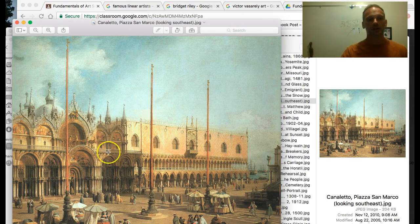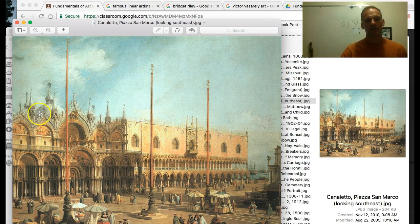This is by Canaletto. Piazza San Marco. You can see converging lines. This is a very strong linear perspective. The lines, the edges of things are appearing to run into the distance. Obviously there's more details in the things that are closer to us. Things that are smaller or further away are smaller so he uses diminishing size.